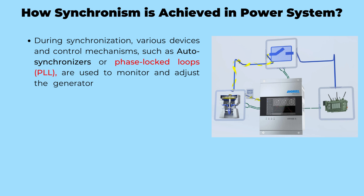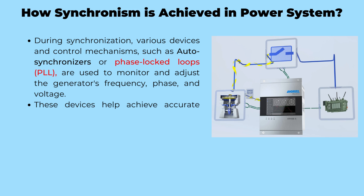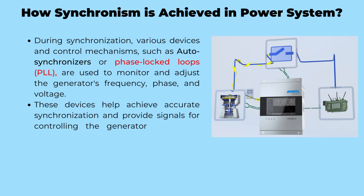Autosynchronizers are devices designed to monitor and adjust the frequency, phase, and voltage of the generator being synchronized. They compare these parameters to the corresponding values in the power system and provide feedback signals for controlling the generator's excitation system and prime mover. Phase-locked loops, or PLLs, are another commonly used control mechanism for achieving synchronization in inverter-based resources. These devices ensure that the generator's frequency, phase, and voltage are in harmony with the power system, allowing for a smooth and seamless connection.